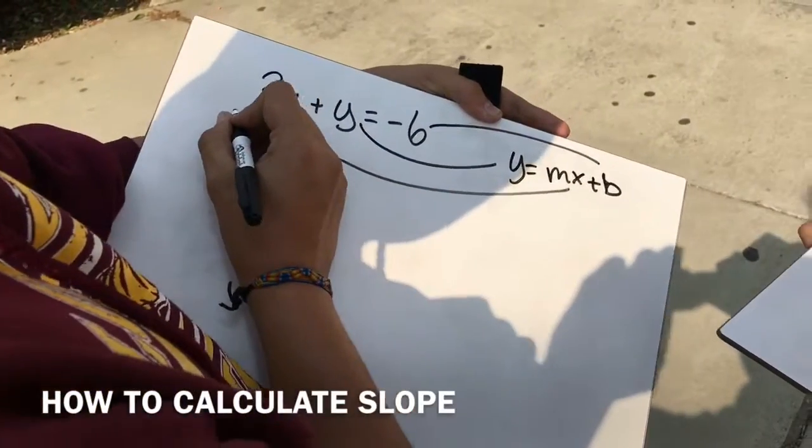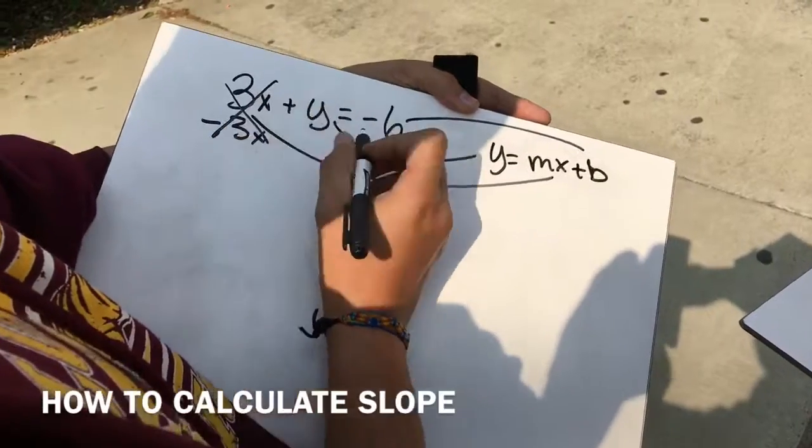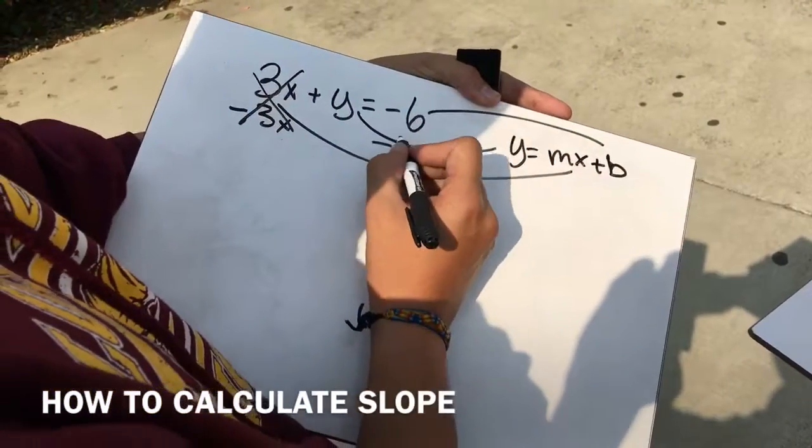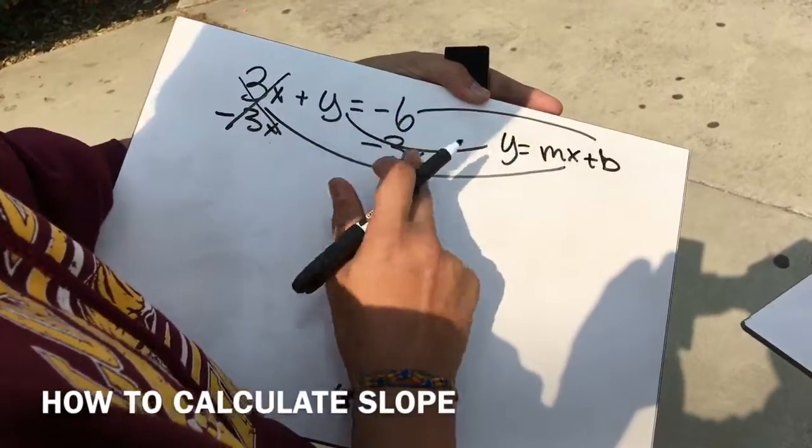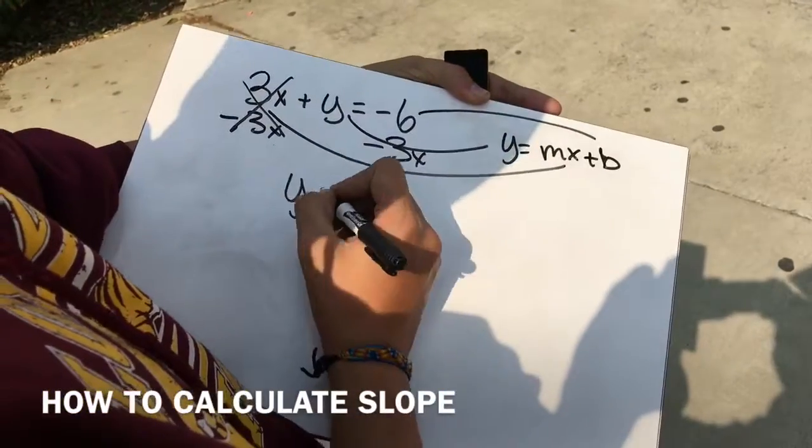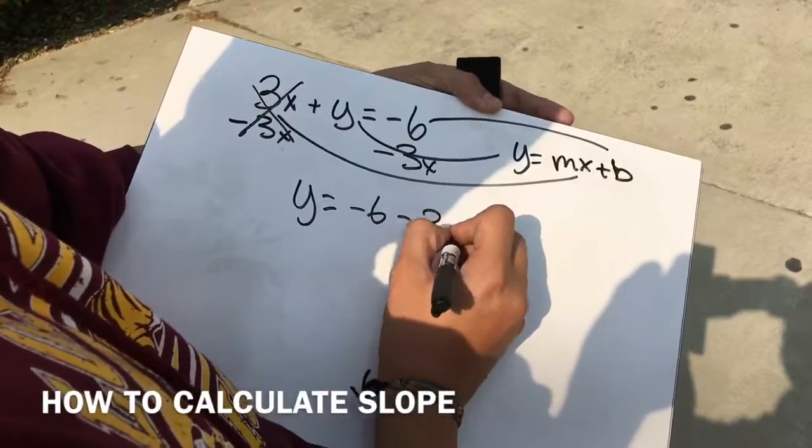Yes. So we're going to minus 3x. It's gone. It cancels out, and we're going to minus 3x over here. That was bad. That's okay. Now we have y is equal to negative 6 minus 3x.